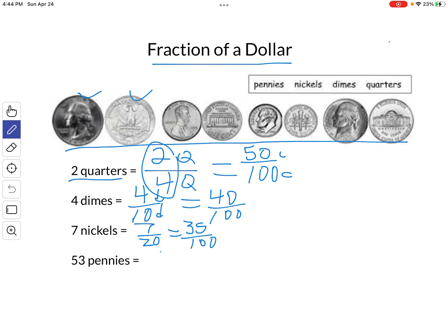Fifty-three pennies. There's only one way to write that. Fifty-three cents out of the hundred cents that it takes to make the dollar.